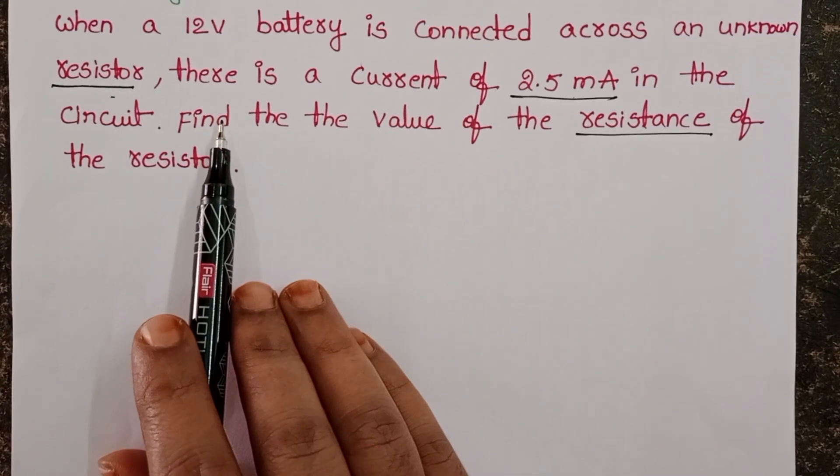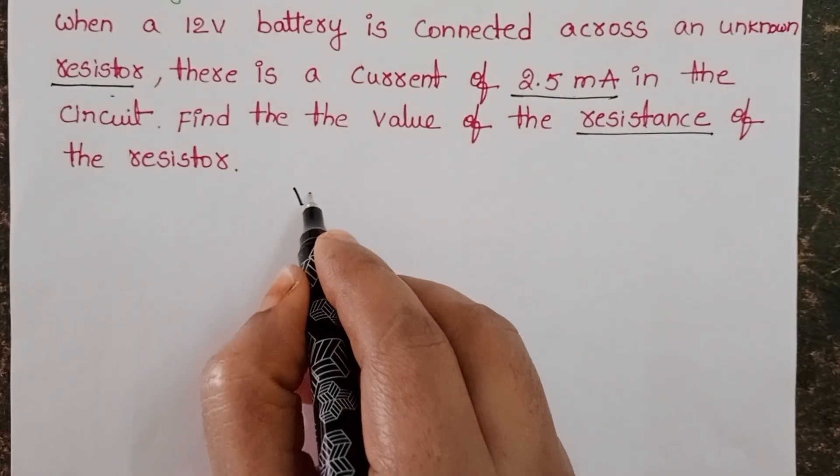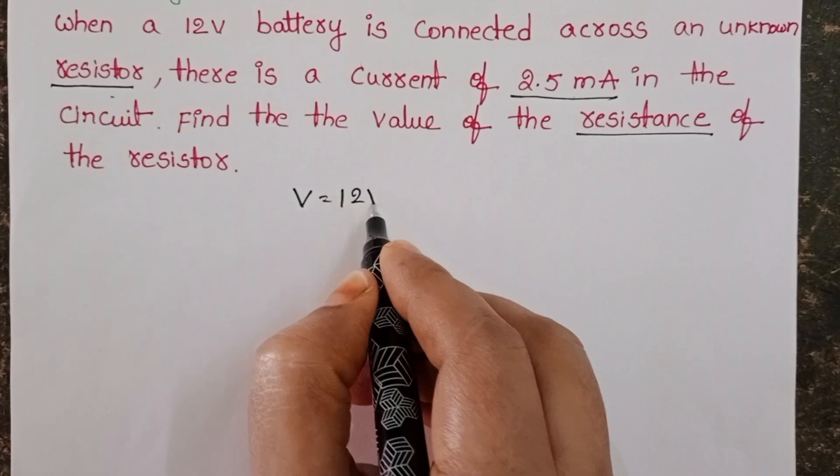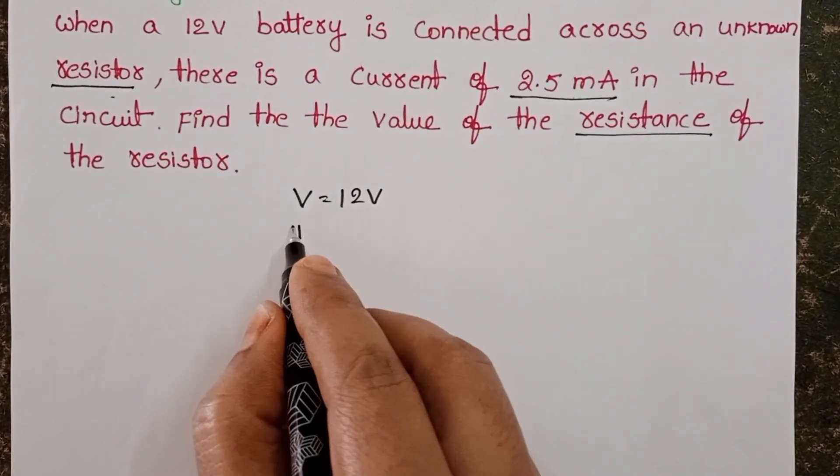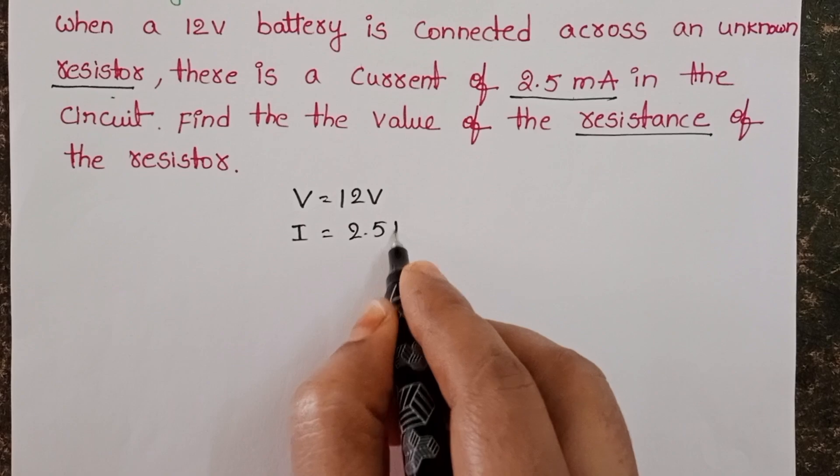In the given circuit, the EMF of the battery is 12 volts and the current passing through the circuit is 2.5 milliamperes.